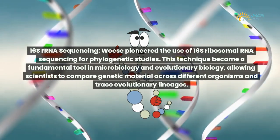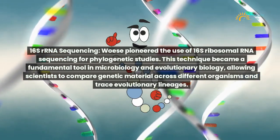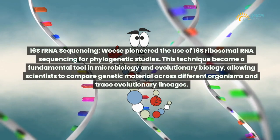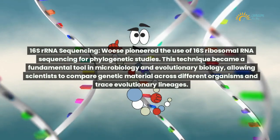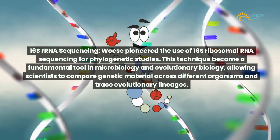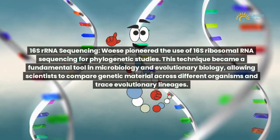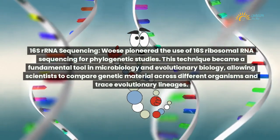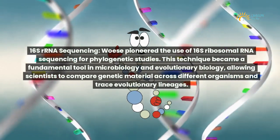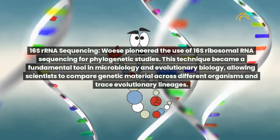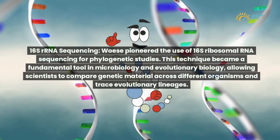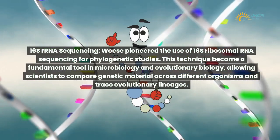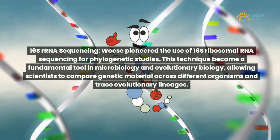16S rRNA sequencing: Woese pioneered the use of 16S ribosomal RNA sequencing for phylogenetic studies. This technique became a fundamental tool in microbiology and evolutionary biology, allowing scientists to compare genetic material across different organisms and trace evolutionary lineages.